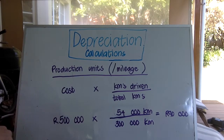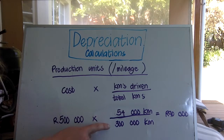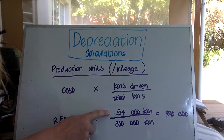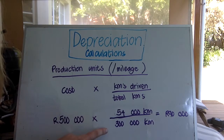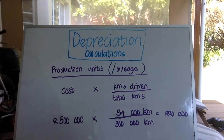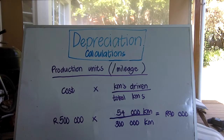You then compare that to how many units were actually manufactured or kilometers actually driven during the year. For our vehicle: the original cost was 500,000 Rand, we expect it to drive a total of 300,000 kilometers over its life, and let's say in this year we drove 54,000 kilometers. We take what it drove this year as a fraction of the total and use that to determine we need to write off 90,000 Rand this year. This is quite a nice and accurate method because there may be some years where the asset is used more than others.